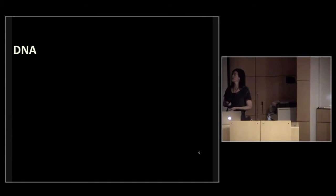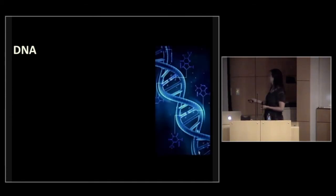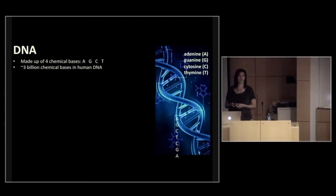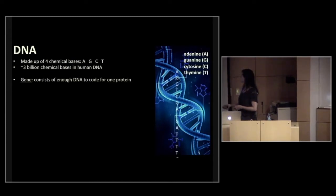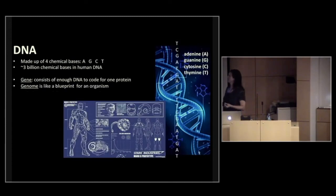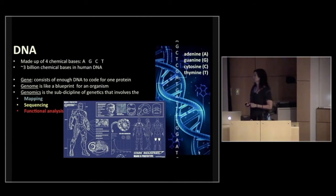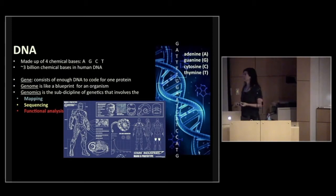Specifically, let's look at DNA. It's a nice image of DNA. It's a double helix structure. It is made up of four chemical bases: adenine, guanine, cytosine, and thymine. And there's three billion chemical bases in human DNA. So here's a strand going up. A gene consists of enough DNA to code for a specific protein. And we'll talk about proteins next. And the genome, I've always thought of it as a blueprint for an organism. So here we've got the blueprint for Iron Man. Ours is far more sophisticated than Iron Man. The study of genomics is the sub-discipline of genetics that involves all three things: mapping of the genome, looking at those different chemicals in the order, the sequencing, and then the final functional analysis.